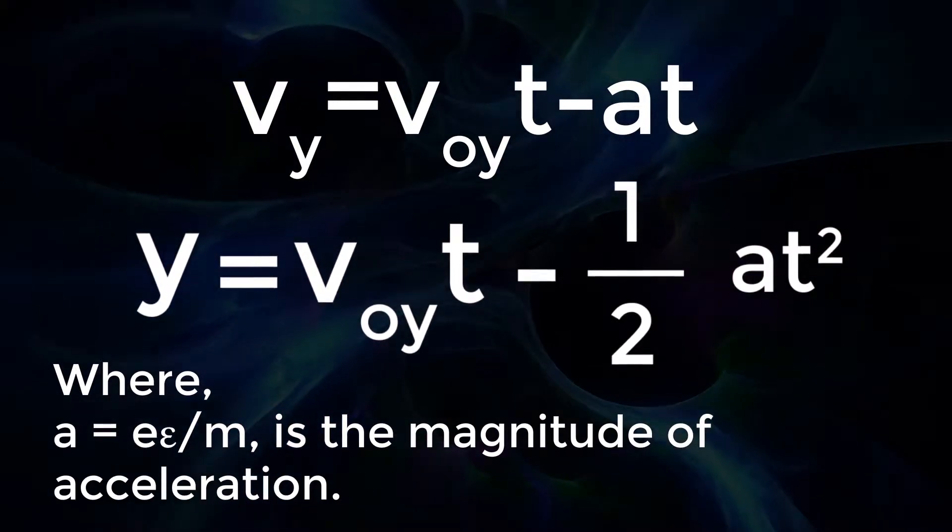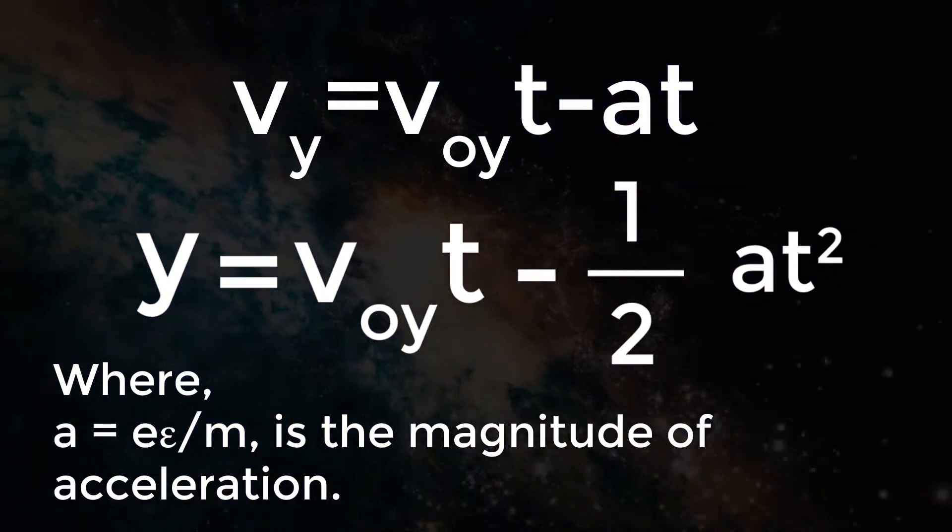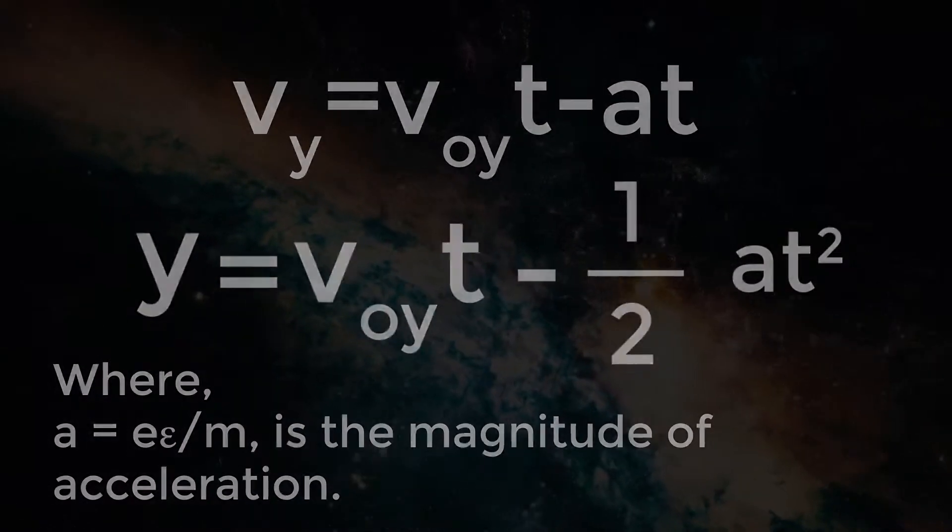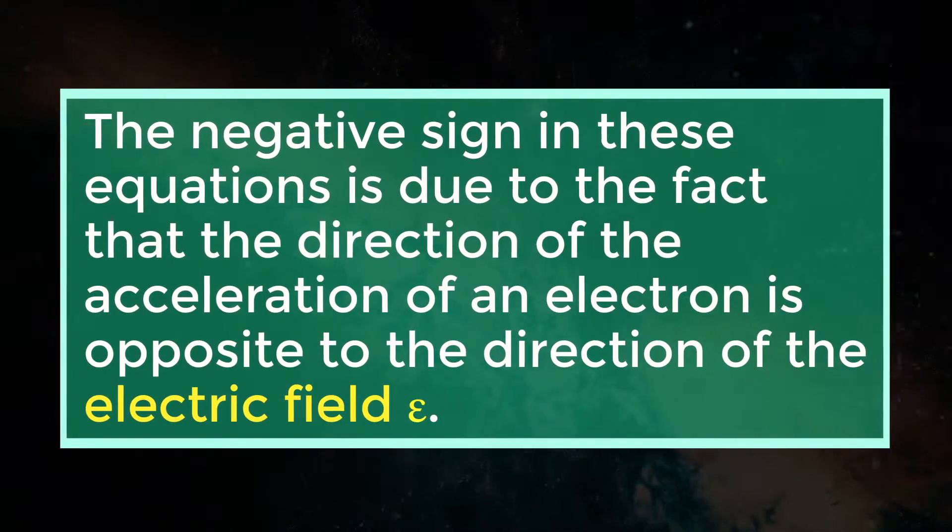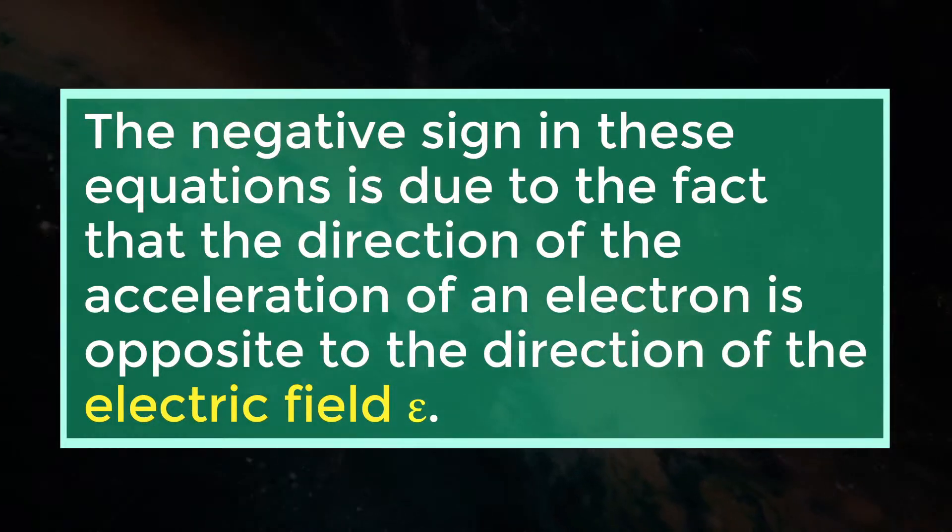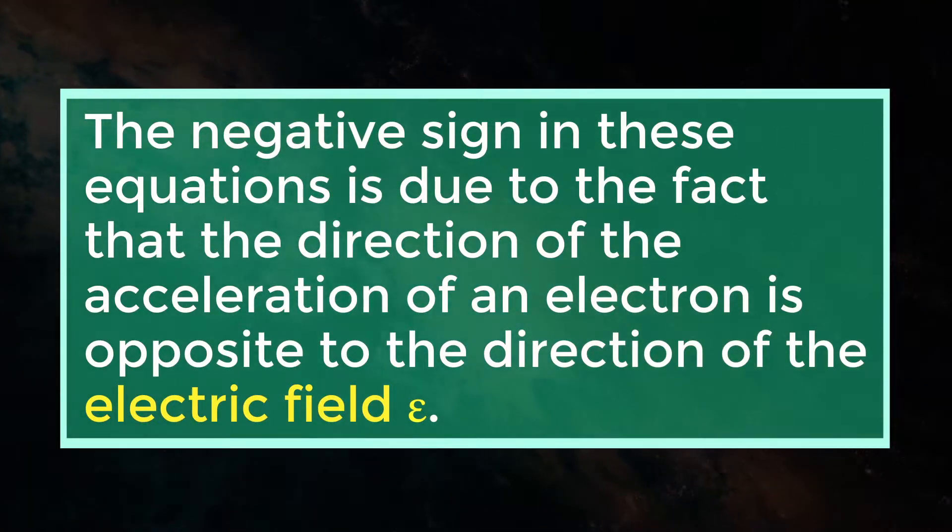Where a is equal to eE by m is the magnitude of the acceleration. The negative sign in these equations is due to the fact that the direction of the acceleration of an electron is opposite to the direction of the electric field E.